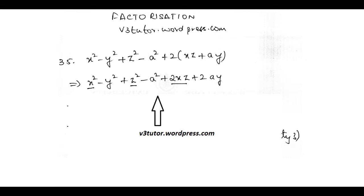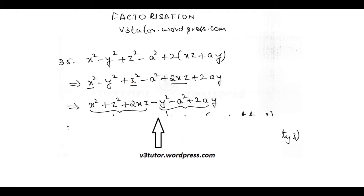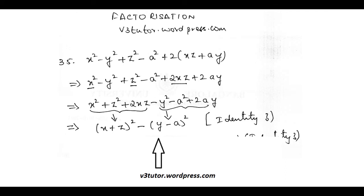Now once I have done this, again it is quite obvious that there is a 2XZ here and I have an X squared and a Z squared. So it leads me to some kind of an identity. So what I do, I rewrite by grouping it like this: X squared plus Z squared plus 2XZ minus Y squared—be careful of this minus sign, carry it wherever you go—minus A squared plus 2AY. Now I know what identity to apply. You have to identify the identity.